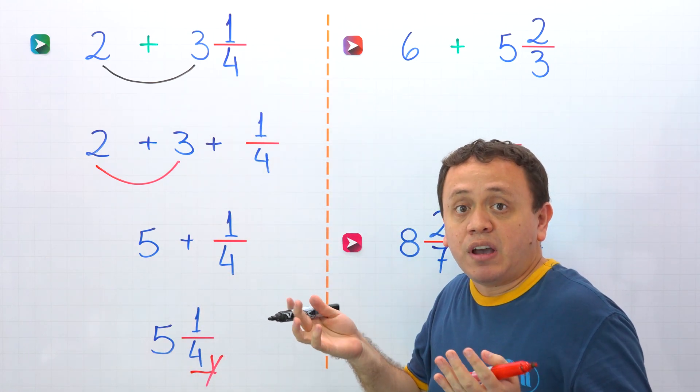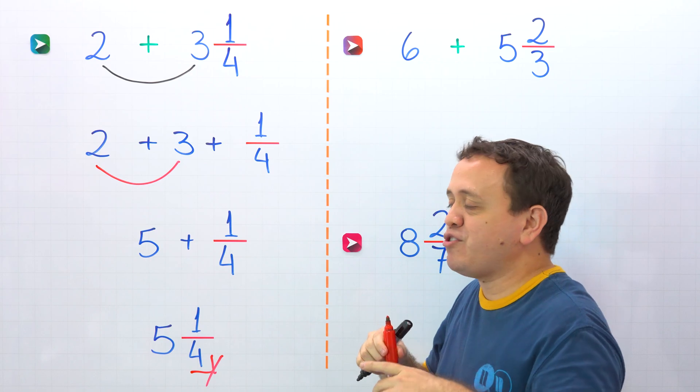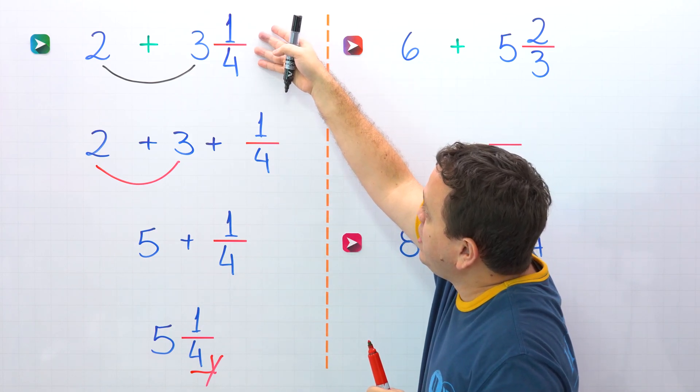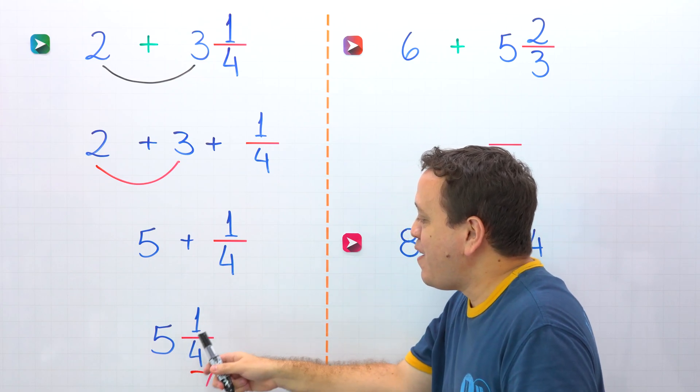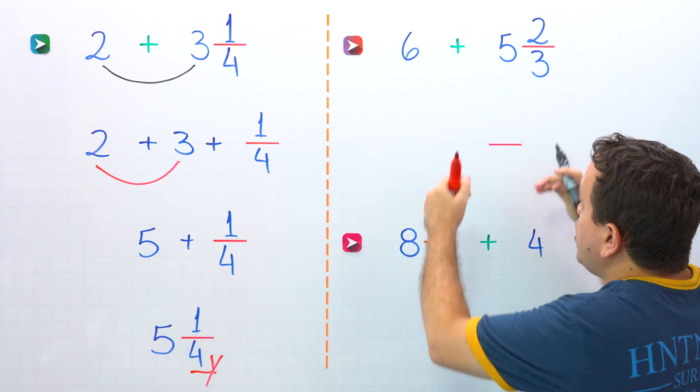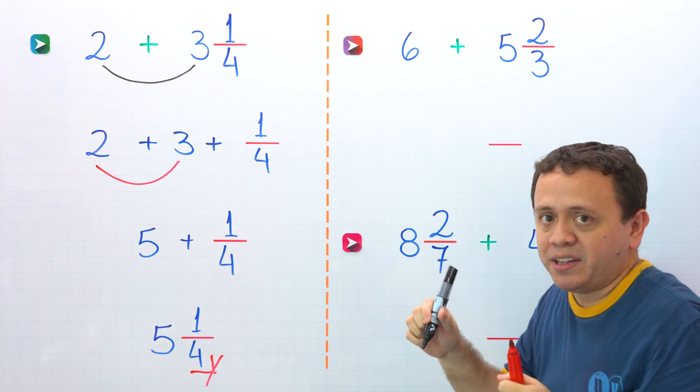Then, we add the fractions. However, we only have one fraction in this example, and that fraction is 1 fourth. Once again, the answer is 5 and 1 fourth. I have two more examples. We're going to solve them using the quick method.